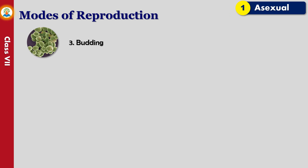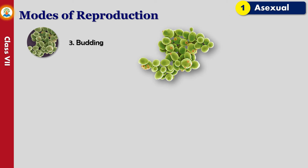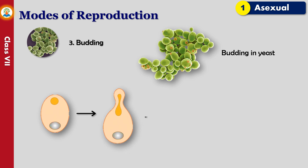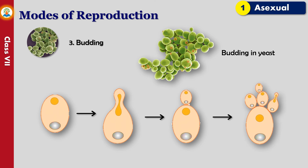In budding, in some unicellular organisms such as yeast, a small bud-like projection starts growing on the body. Slowly it grows in size until a complete cell similar to the parent cell is formed. When it gets detached from the parent body, a chain is formed giving rise to a number of new individuals. The process of multiplying with the help of formation of buds is called budding.